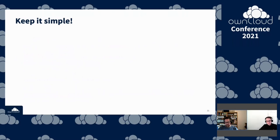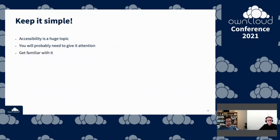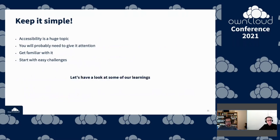Don't attempt the certification in one go — that's really hard because accessibility is a huge topic. I'd propose getting familiar with it first, since as Toby mentioned you'll need to give it attention in the near future. The easiest way is to get hands-on, understand the challenges, and get them fixed — starting with the easy ones. Let's look at some of our learnings, comparing what we had early this year to what we have now.